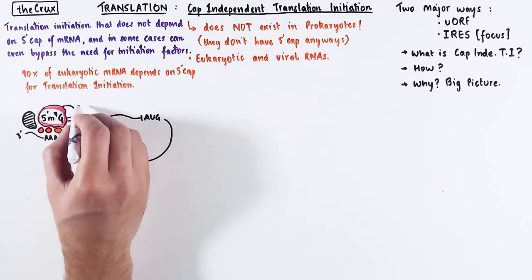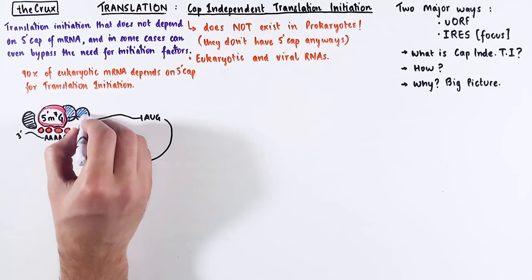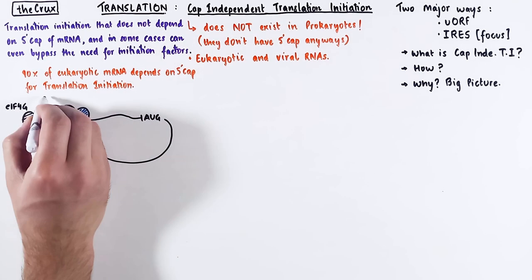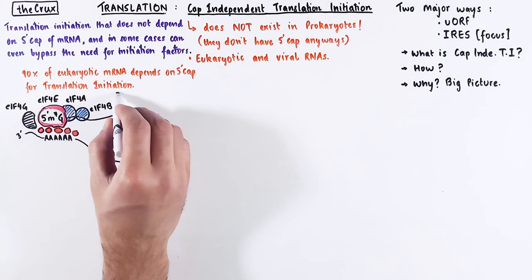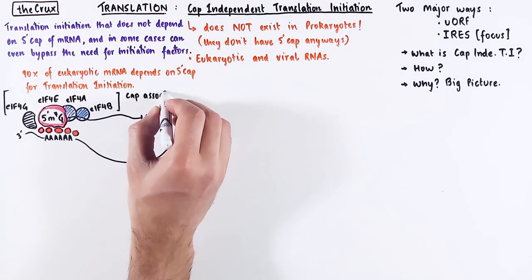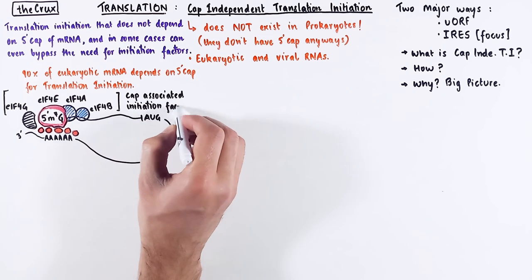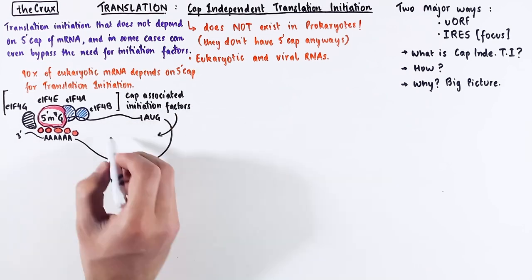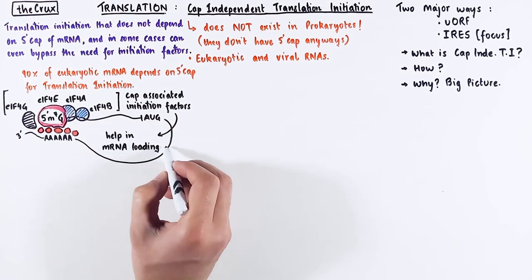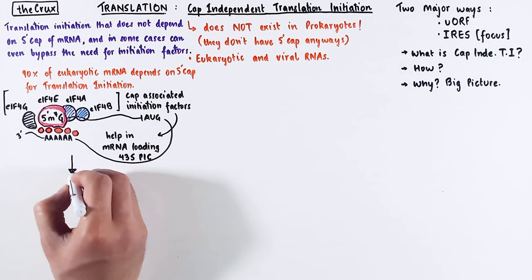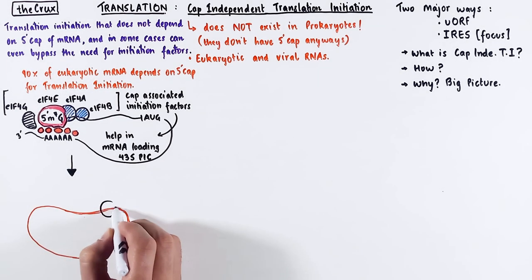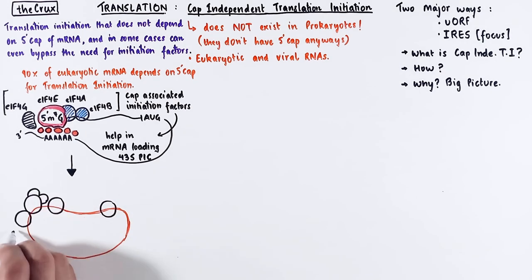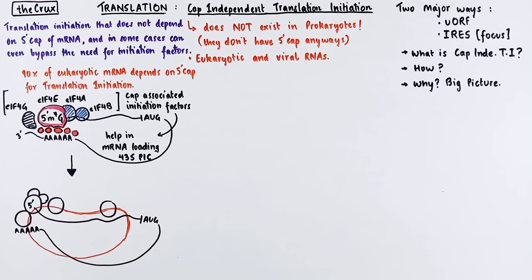These factors are the initiation factor family 4, and are named EIF4G, 4E, 4A, and 4B. And once these CAP-associated factors assemble on the mRNA, they help load this mRNA onto the 43S pre-initiation complex. I have a separate video that goes into the details of CAP-dependent translation initiation. The link to that is down in the description, as well as linked on the top right.